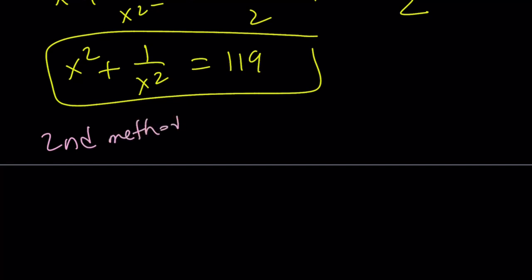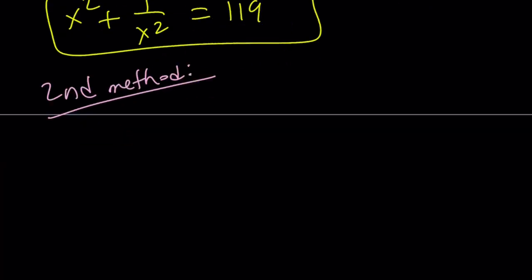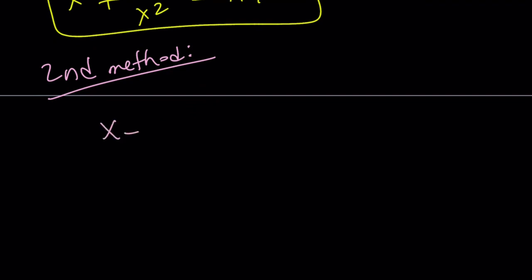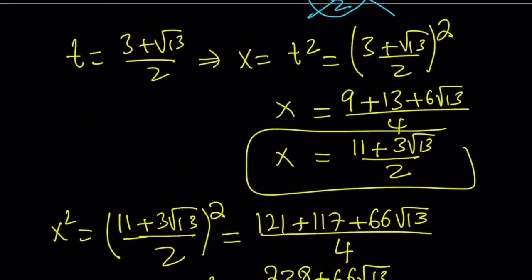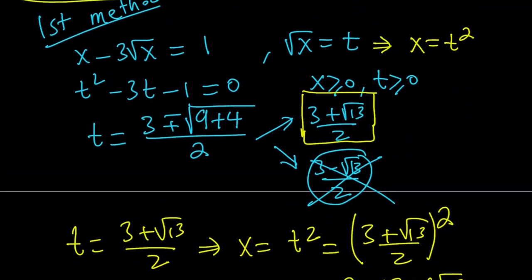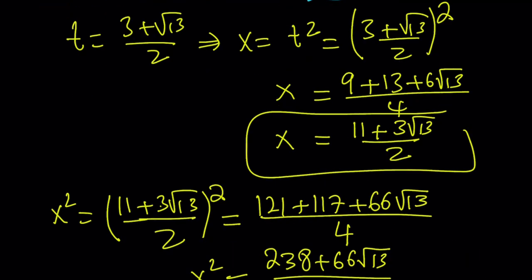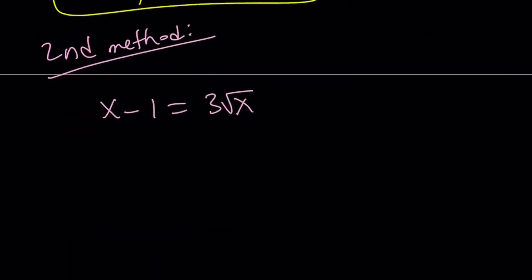Now, my first method is a little brute forcey. So for my second method, we're going to do something smarter. By the way, I just wanted to add a real quick remark here. Remember how we solved the quadratic? You could also just isolate 3 root x and then square both sides, and you could solve the quadratic equation that way too. Same thing. Now, for the second method, here's what we're going to do. We're going to divide by square root of x.